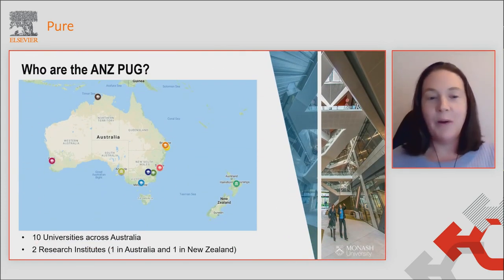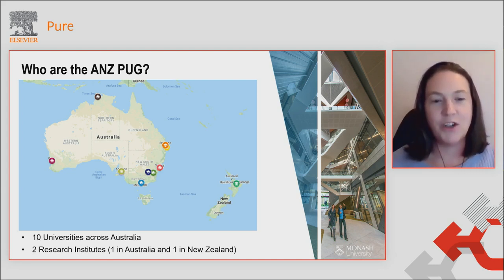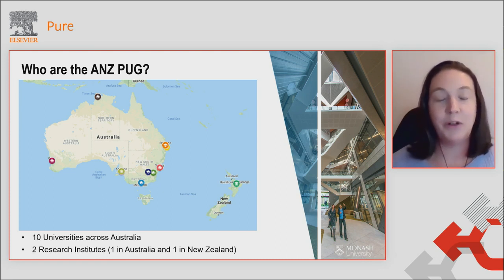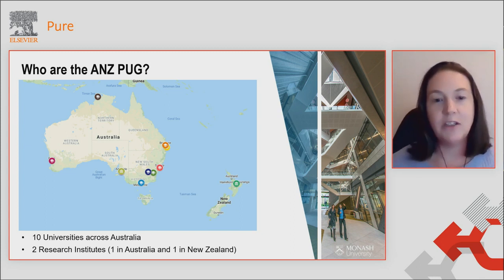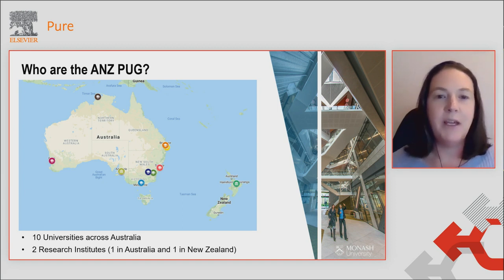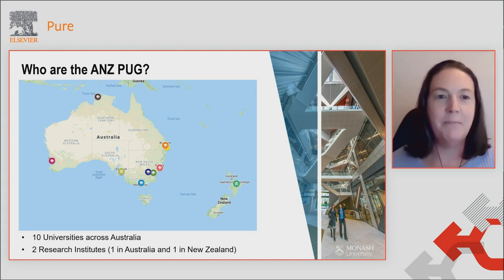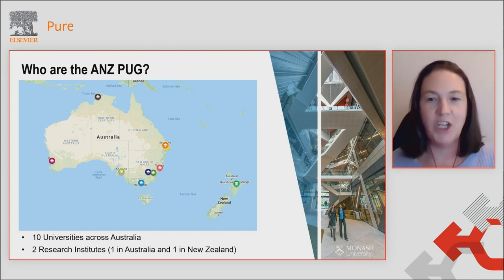So who are we? As you can see, Australia is a very large country, but each of these dots represents an institution in our Australian and New Zealand Pure User Group. There are 10 universities in Australia and two research institutes, one in Australia and one in New Zealand. As well as being quite geographically diverse, we are currently across six different time zones, so finding a meeting time that suits everybody is also a challenge.